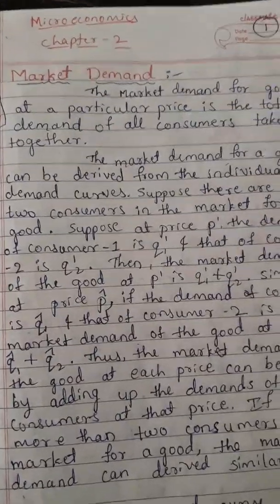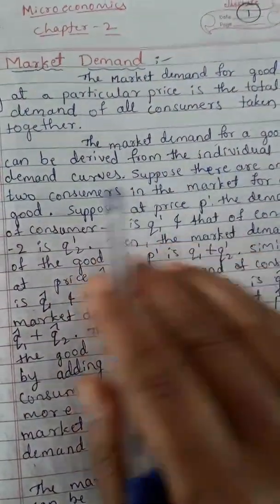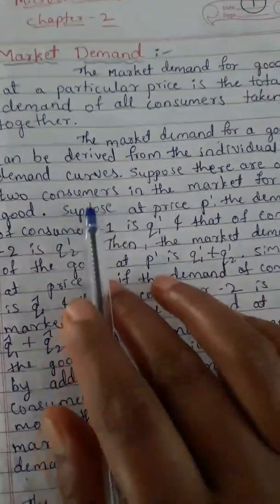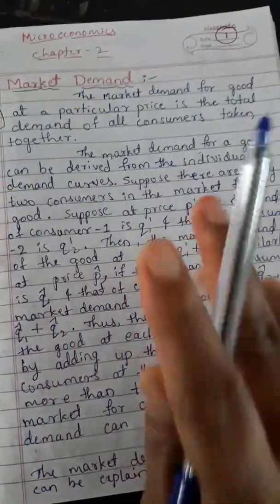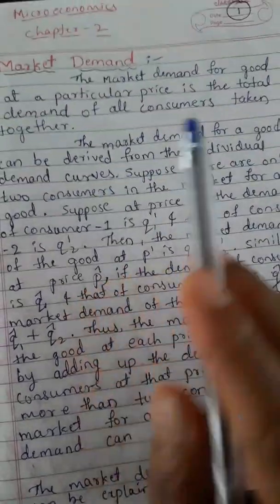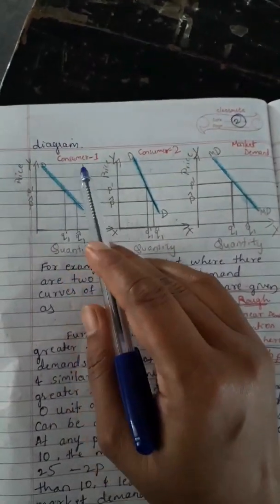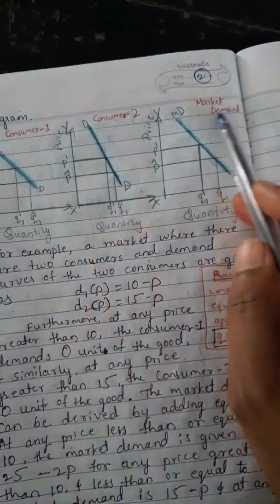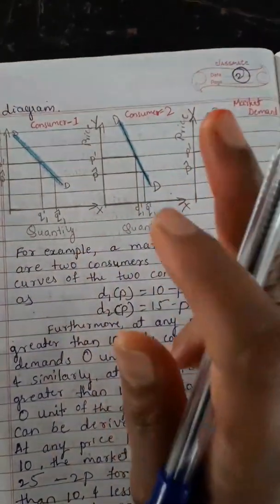The market demand for a good can be derived from the individual consumer demand curves. We assume that there are only two consumers in the market — consumer one and consumer two. This can be explained with the help of a diagram. Here is the first diagram for consumer one, and this one is the market demand curve. We assume only two consumers in the market.